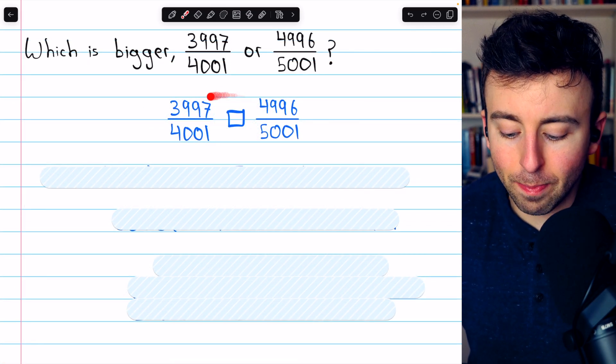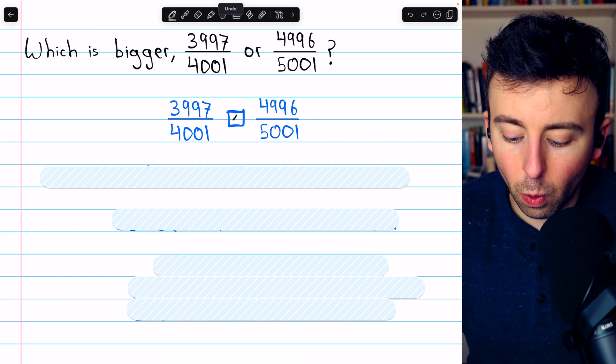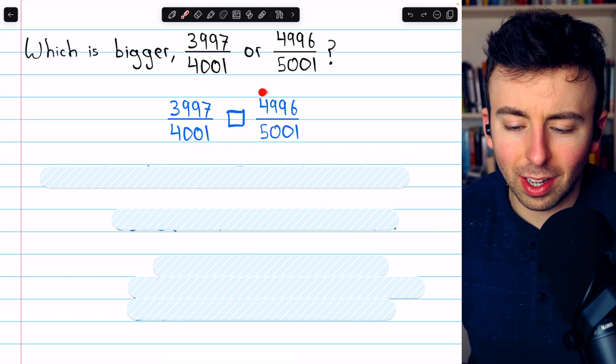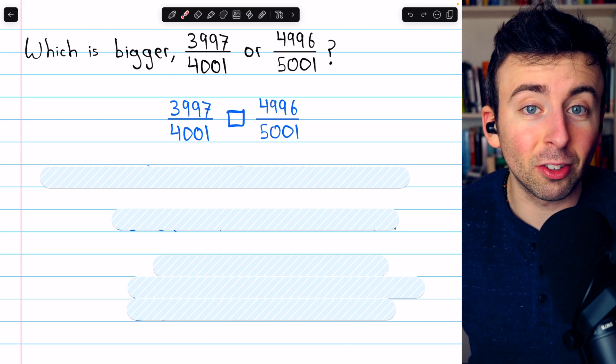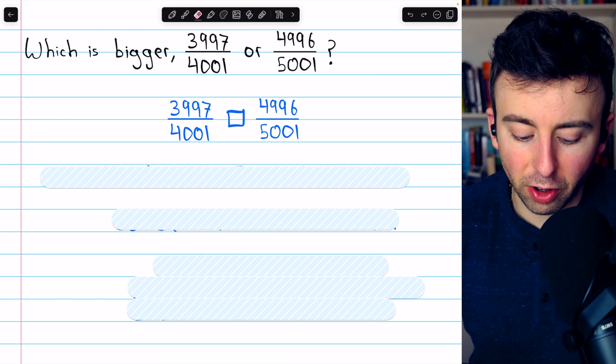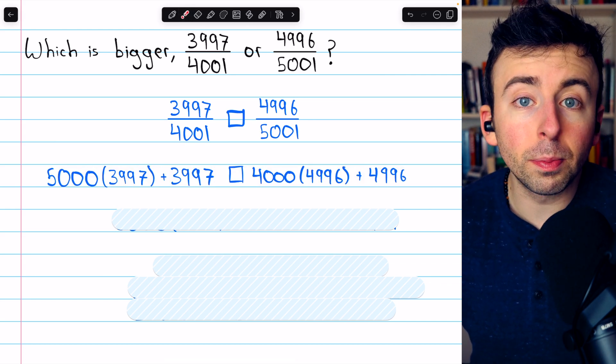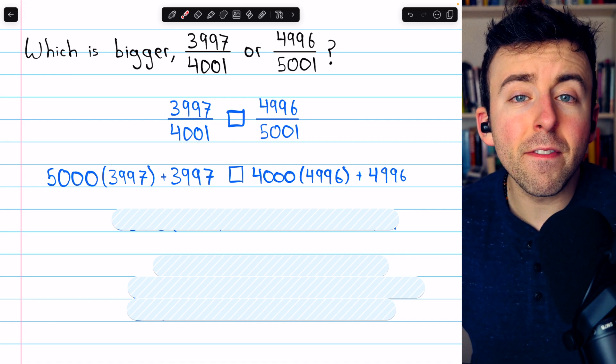Let's start by setting up a blank sort of inequality. In the middle, we either have greater than or less than, but we don't know yet. So let's just work with this, pretend that it's an inequality, and we'll figure out what the inequality actually is at the end. It's much easier to work with multiplication than division. So the first thing we ought to do is get rid of this division. Multiply both sides by 4,001 and multiply both sides by 5,001.